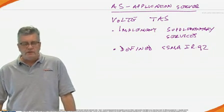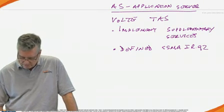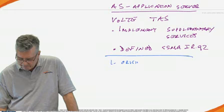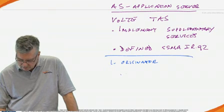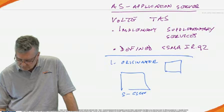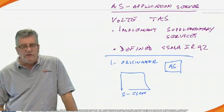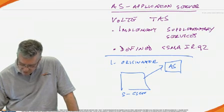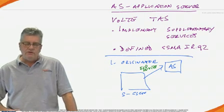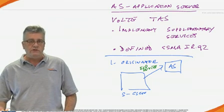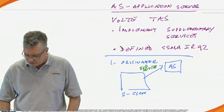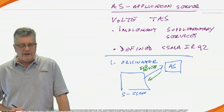Now the TAS is going to be brought into play during call setup in two instances. Number one, from the originator, serving CSCF will take the initial SIP invite and send that invite off to the TAS. Why do we need to do that? Because we may have to perform originating services for that user. An example, I have specific privacy settings I may need to invoke, or some other originating type service. And the AS will do those services and send the invite back.